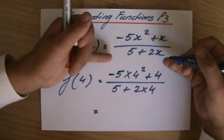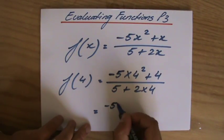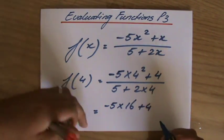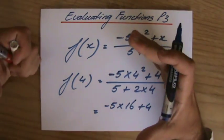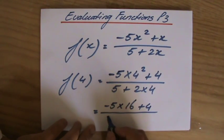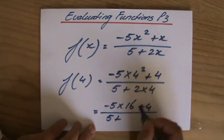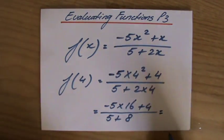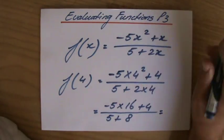So the numerator now becomes minus 5 times 16 plus 4. And so please take care of PEMDAS and BIDMAS, it's really important, over 5 plus 8. Yeah, I multiply it before I add. Now let's have a look, minus 5 times 16.